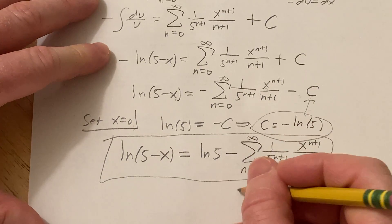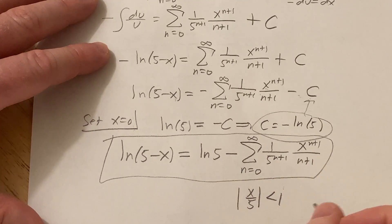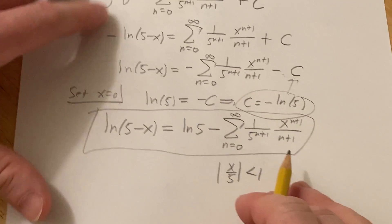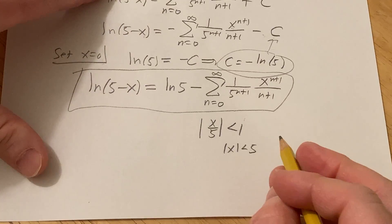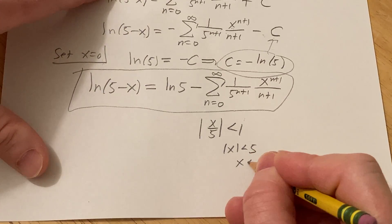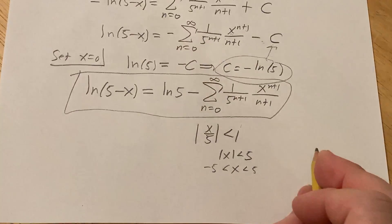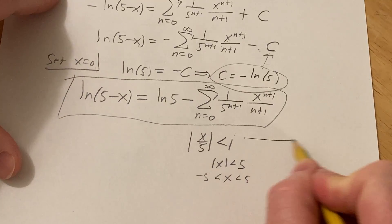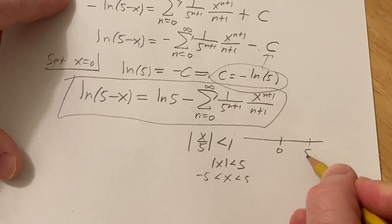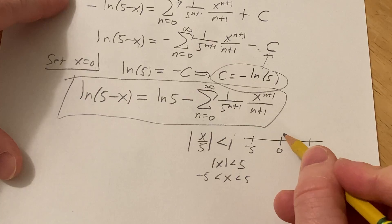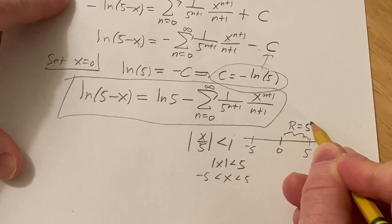For the radius of convergence: before integrating, the series converged when the absolute value of x/5 is less than 1, which means the absolute value of x is less than 5. This power series is centered at 0, and converges on the interval from negative 5 to 5, so the radius of convergence is R equals 5.